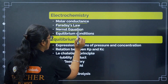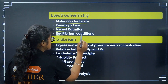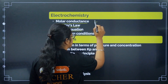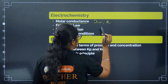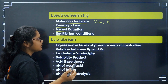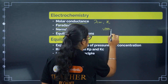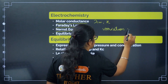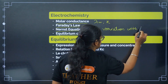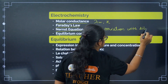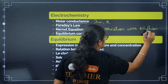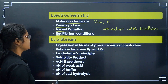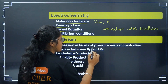Next, in Electrochemistry, focus on molar conductance, Faraday's law, the Nernst equation, and equilibrium conditions. For molar conductance, know how to calculate lambda_m and kappa, and their variation with dilution.